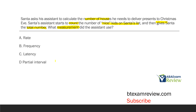It's not latency — latency is the time between the SD and the first response; we're not measuring time in between here. And partial interval would be a time sampling or interval recording, broadly known as a discontinuous measurement procedure. We're not using discontinuous measurement because we're taking a total number of kids — not using time sampling, not using interval recording, not measuring time or duration. We're simply taking the count. So the measurement used is B — frequency.